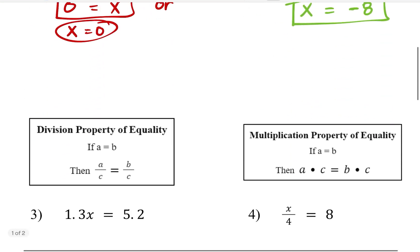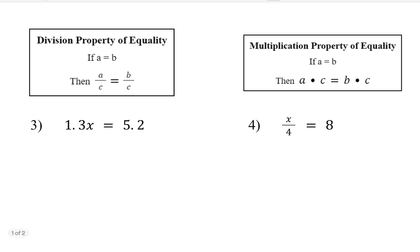Let us try another set of examples. Number three: 1.3x. I do not see any addition, no subtraction, so that means multiplication is applied. So inverse of multiplication is division. So I need to divide 1.3 on the left side of the equation in order to isolate x, and I need to divide the right-hand side with 1.3 as well.